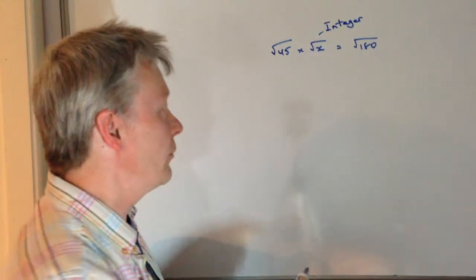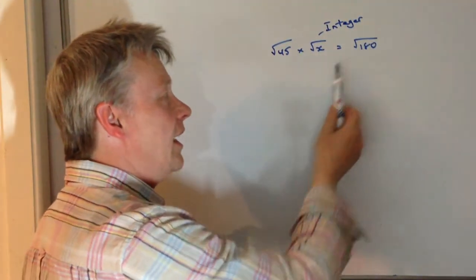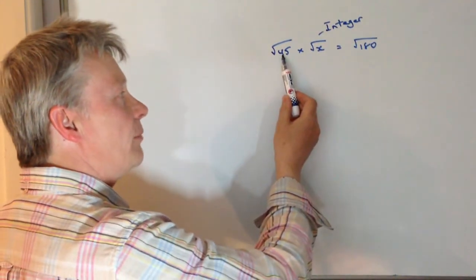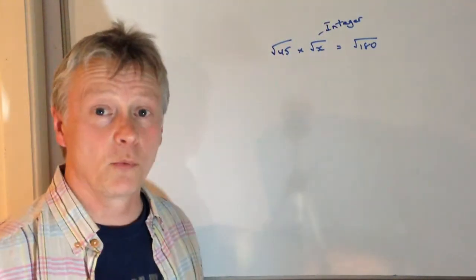Okay, so the thing to look at with surds is that really if you just ignore the root sign for the moment, what number when you multiply by 45 equals 180?